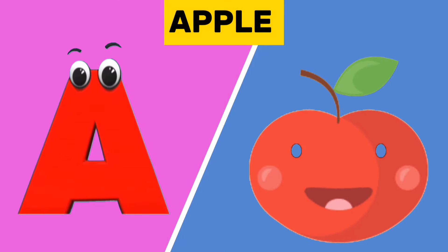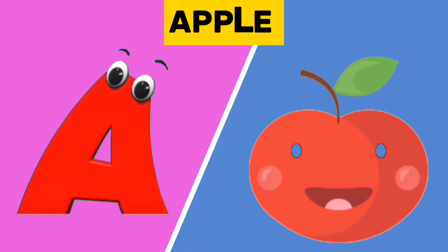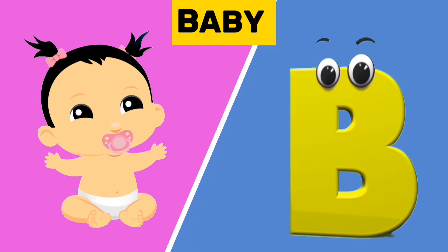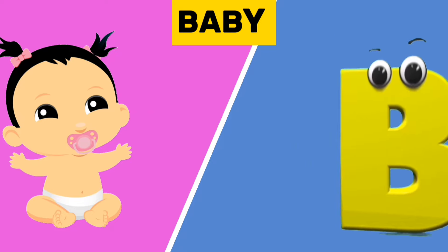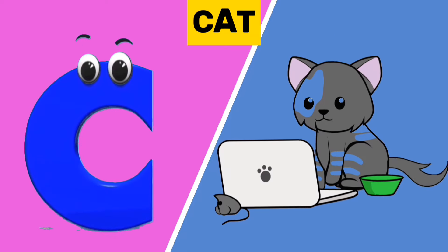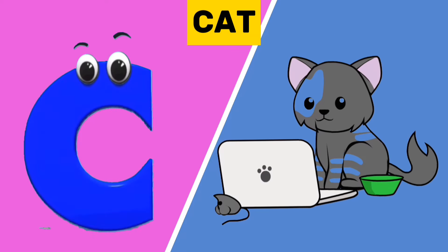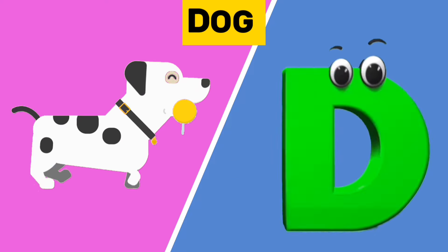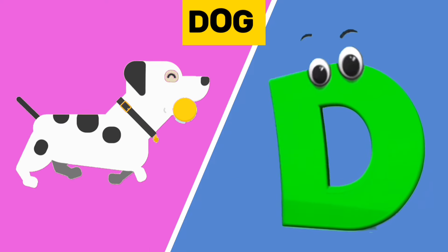A is for apple. A, a, apple. B is for baby. B, b, baby. C is for cat. C, c, cat. D is for dog. D, d, dog.